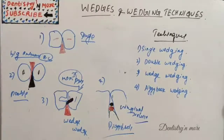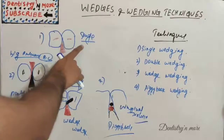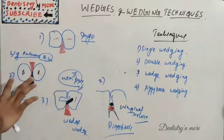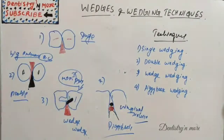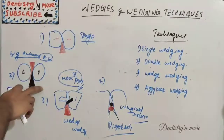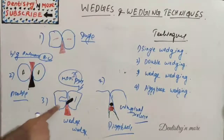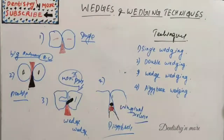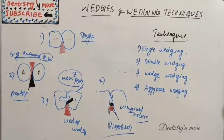So these are the four techniques used with wedges. Single wedging uses only one wedge; the rest all use two wedges. Double wedging goes from buccal and lingual. Wedge-wedging uses a right-angle second wedge, and piggyback wedging uses a bigger and smaller wedge. That's all about wedges and wedging techniques — hope you understood, and I'll come up with a new topic in conservative dentistry. Thank you.